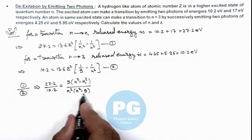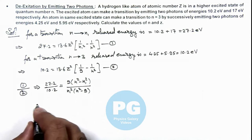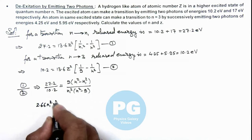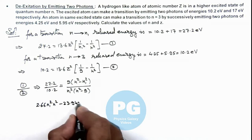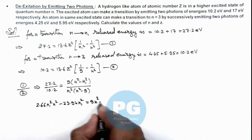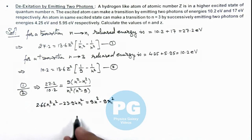And if we further cross multiply these terms, multiply these terms and further open it, this gives 2.66 n1 square n square minus 23.94 n1 square is equal to 9 n square minus 9 n1 square. I have simply cross multiplied and opened these.